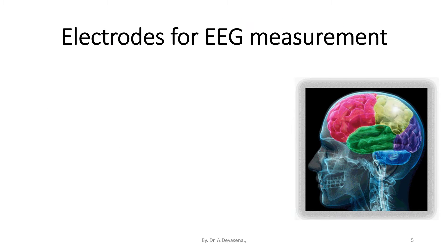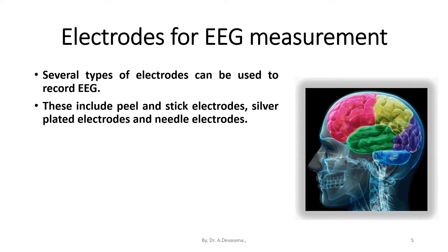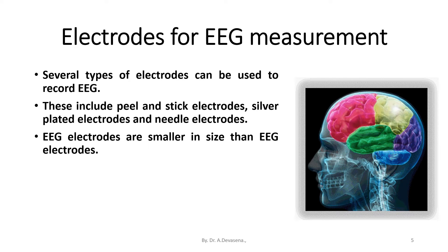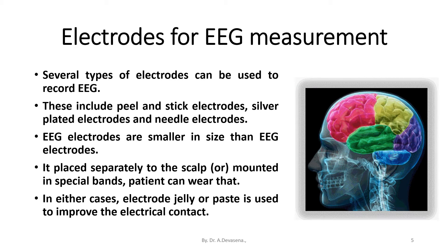Now we see the electrodes for EEG measurement. Several types of electrodes can be used to record EEG. These include peel and stick electrodes, silver-plated cup electrodes and needle electrodes. EEG electrodes are placed separately to the scalp or mounted in special bands. In either case, jelly or paste is used to improve the electrical contact.